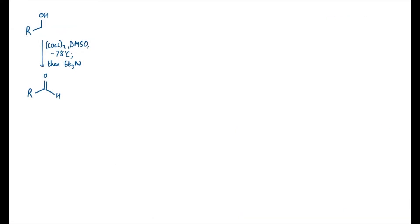So I've got my conditions here. I'm going to use the example of a primary alcohol being oxidised into an aldehyde, but this will also work for a secondary alcohol being oxidised into a ketone. My reagents are oxalyl chloride, which has a structure like this — it's kind of like a double acid chloride. This is a sort of activating agent in my reaction. My other key component is DMSO, which is normally used as a solvent, but I'm going to be able to use it as a reagent here.